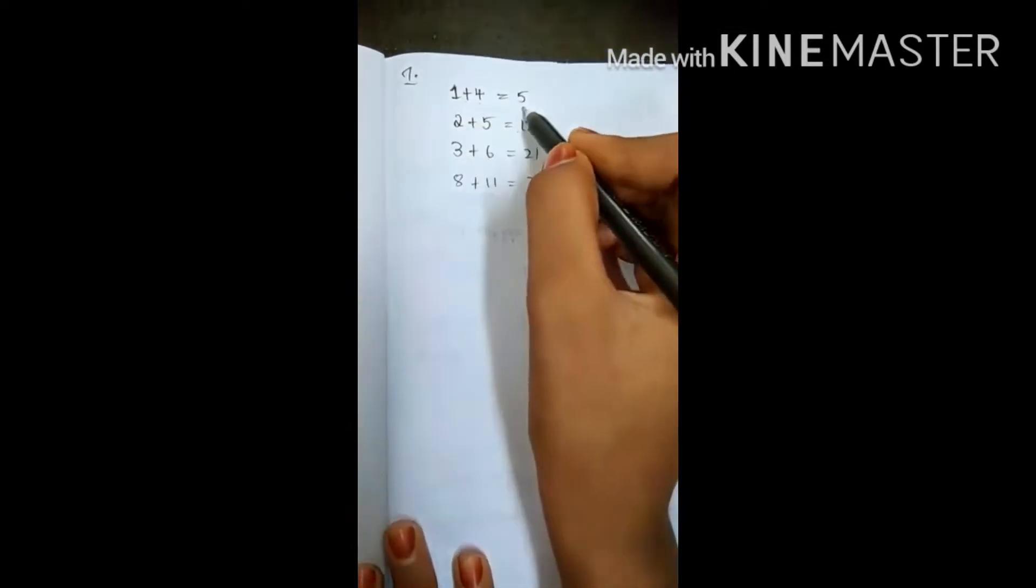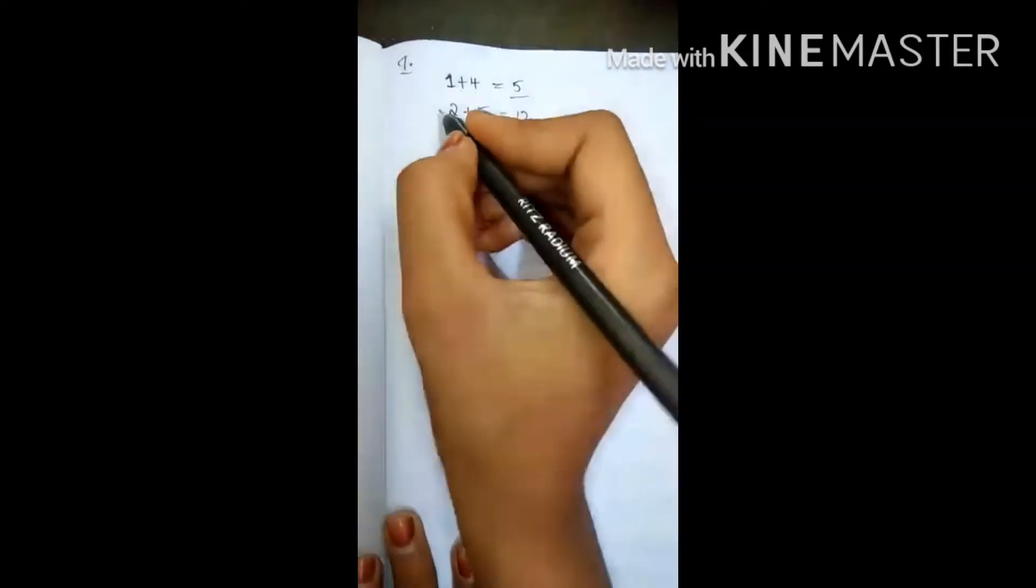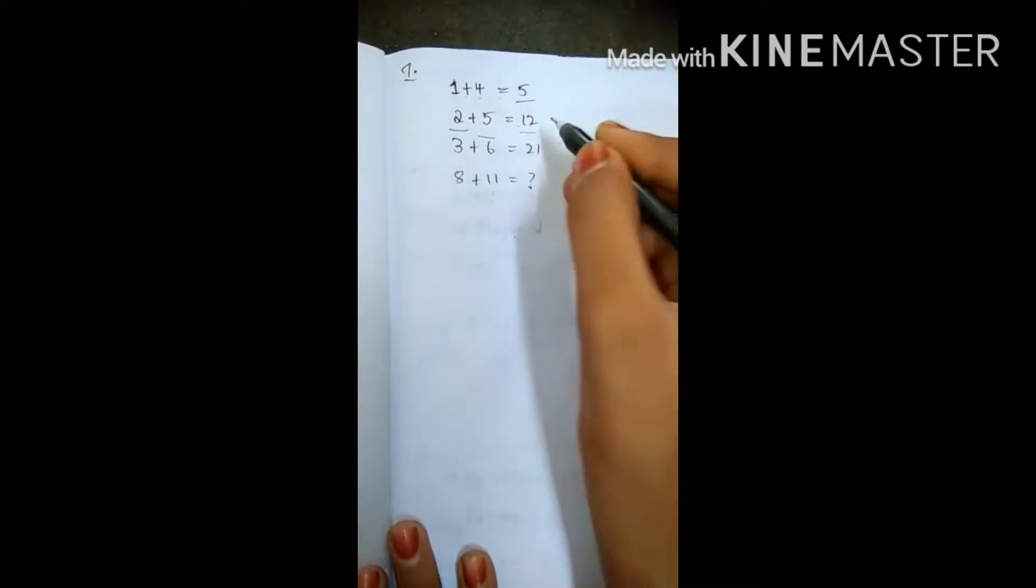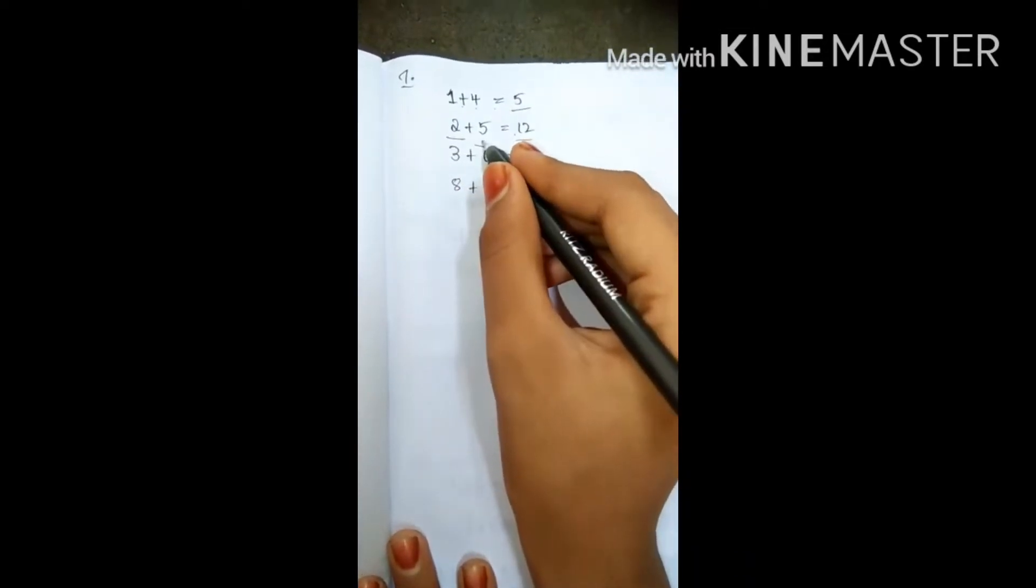See here, 1 plus 4 equals 5. Now, 5 plus 2 equals 7, 7 plus 5 equals 12. Got it? 5 plus 2 is 7, 7 plus 5 is 12.